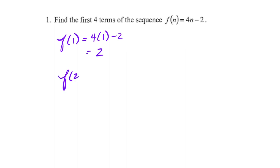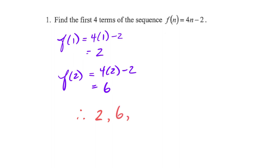I could then find F of two, which is four times two minus two. Replacing all my Ns with my term number — you could just do that in your head. Replace N with one, you get two. Replace N with two, you get six. Replace N with three: four times three is 12, minus two is 10. Replace N with four: 16 minus two is 14. The question only said find the first four terms, so our first four terms are 2, 6, 10, 14.